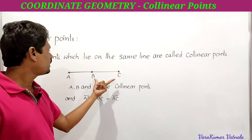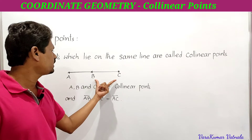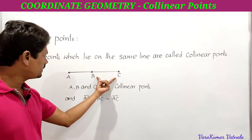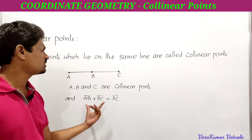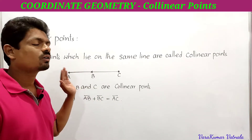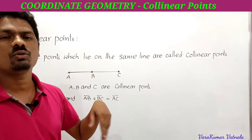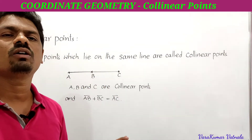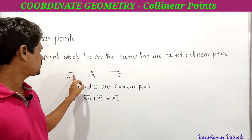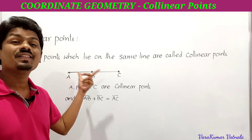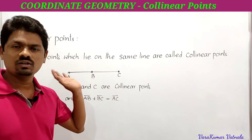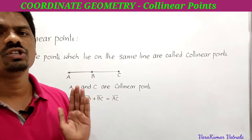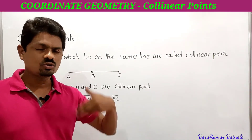If A, B, C are collinear points, then the sum of the distance between A and B and B and C is equal to the distance between A and C. That is, AB + BC = AC. This is the condition for collinearity, and you have to remember this to solve the third problem.